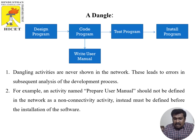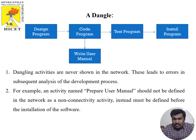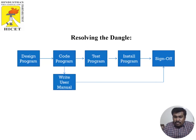Dangling activities are never shown in a network — they lead to errors in subsequent analysis. A dangle is a gap between two or more processes. For example, an activity such as preparing a user manual should not appear as a non-connected activity; instead it must be connected to some installation program. To resolve a dangle, draw a link from the user manual to 'sign off', so once the process is completed it is signed off.